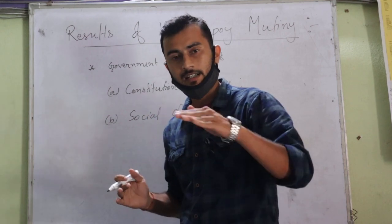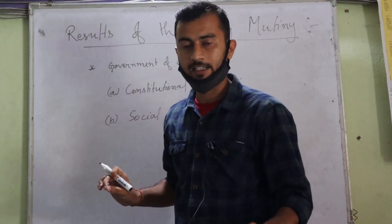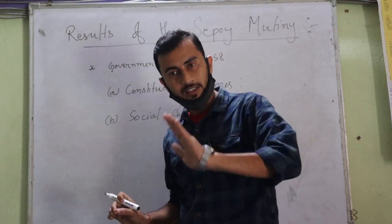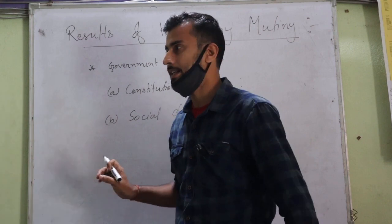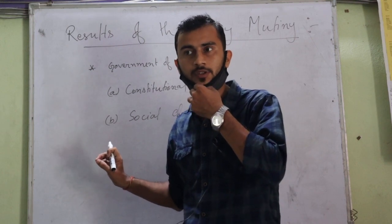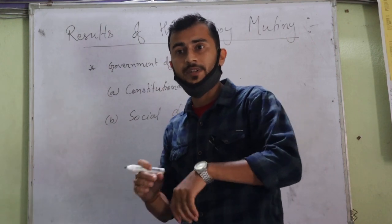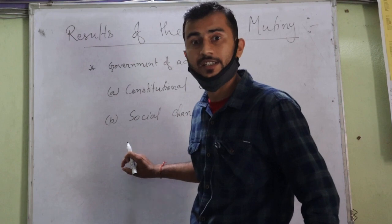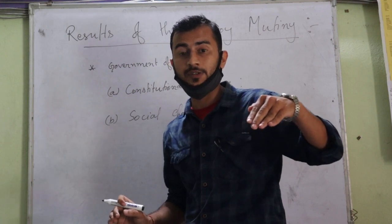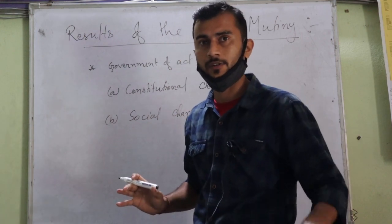We discussed another important topic which was the 1857 revolt. There are various causes for the 1857 revolt — social, political, economic — and the immediate causes were very important. The immediate cause was the Indian sepoys who were working under the British regime started this revolt. That's why this revolt is also known as the Sepoy Mutiny, because the immediate reason was the use of the Enfield rifle.